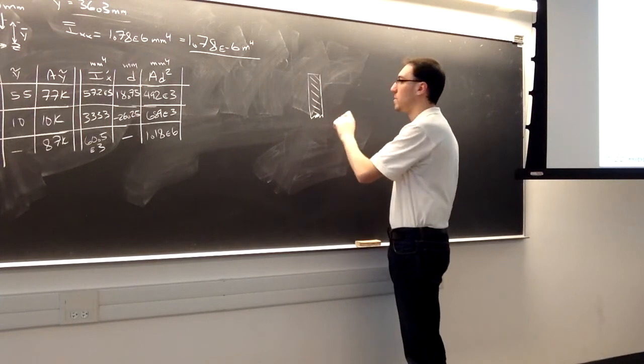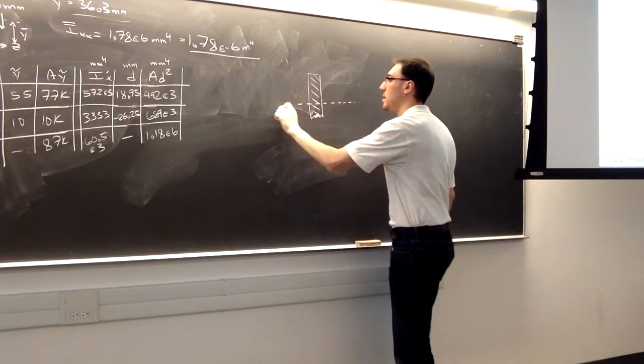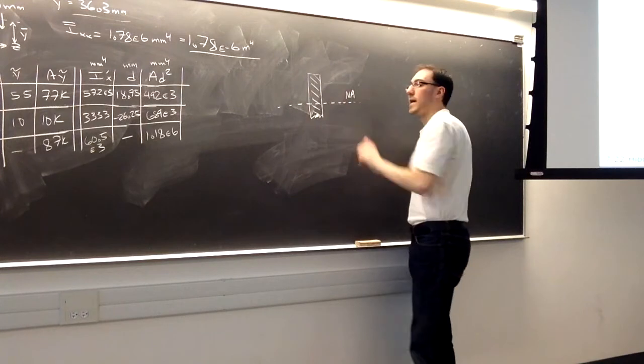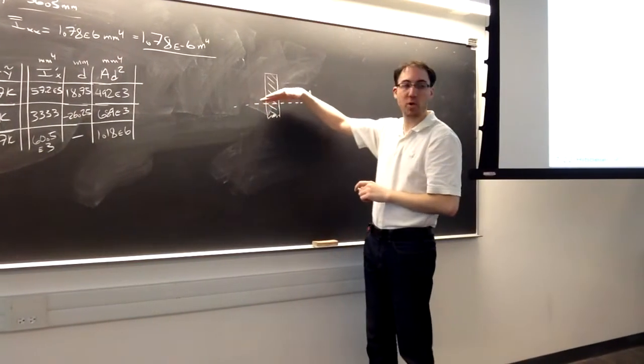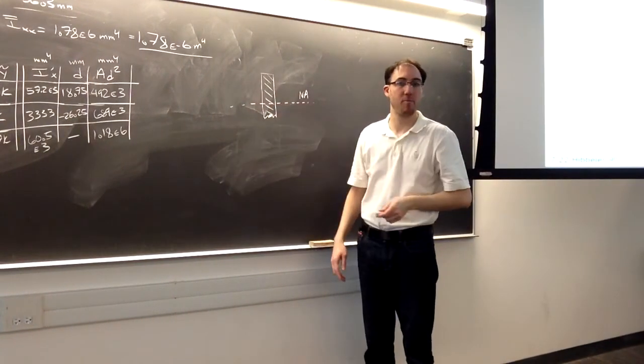Now here, we see that the neutral axis passes through. In between it, it's not at the bottom like we saw in the previous example.